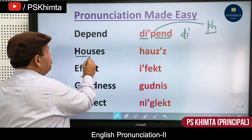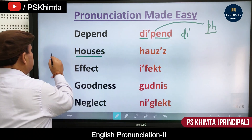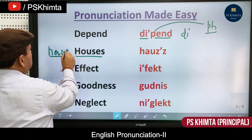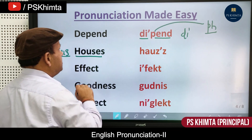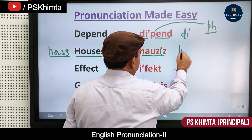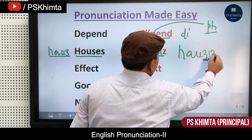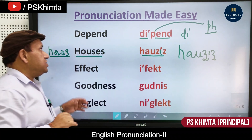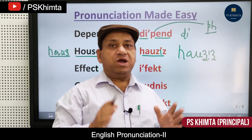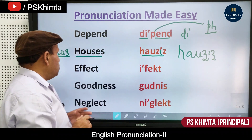Next is 'house.' It is pronounced as 'h-a-us': house. Importantly, in the plural form, the 's' gives a 'z' sound: houses. The correct plural pronunciation is 'houses.' For example: 'We have many houses in this locality.'